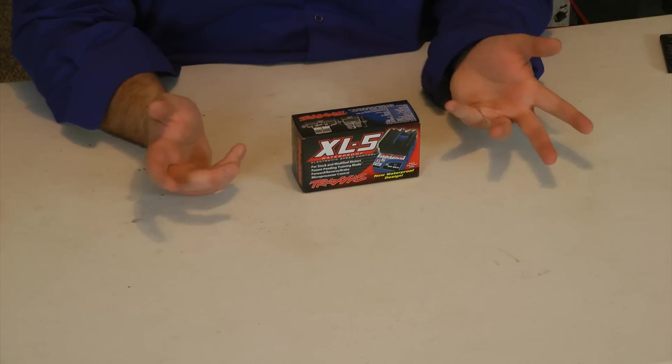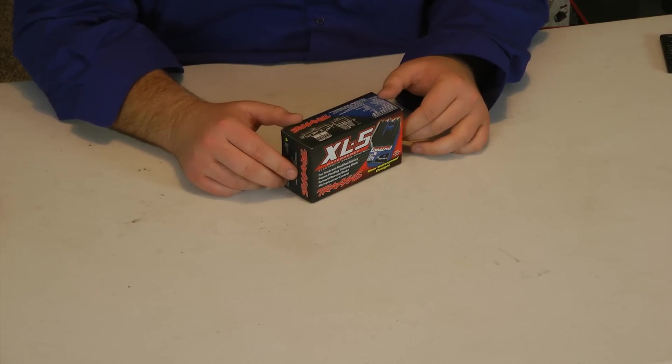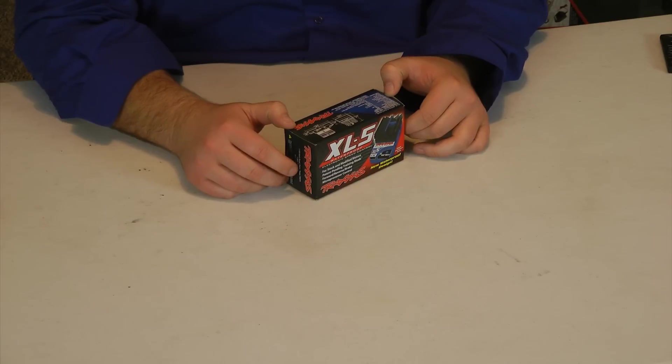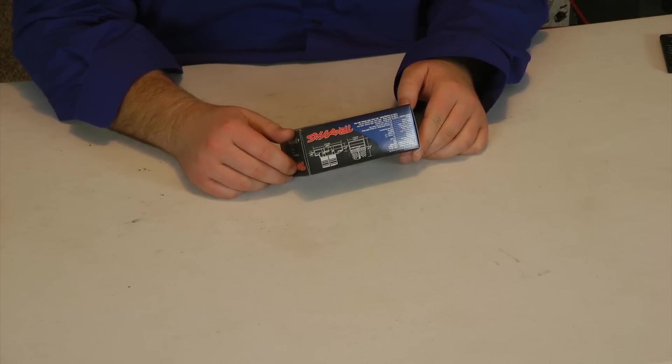And as you see, pretty standard Traxxas packaging. This is the XL5. This is what you're going to find in the Slash two-wheel drive. This is for a brushed system.